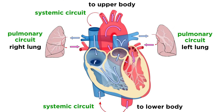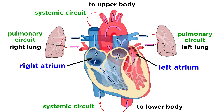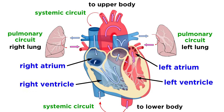So we have two circuits and two receiving chambers in the heart, where these cycles finish, those being the right atrium and left atrium. Along with these, there are two main pumping chambers, those being the right ventricle and left ventricle.